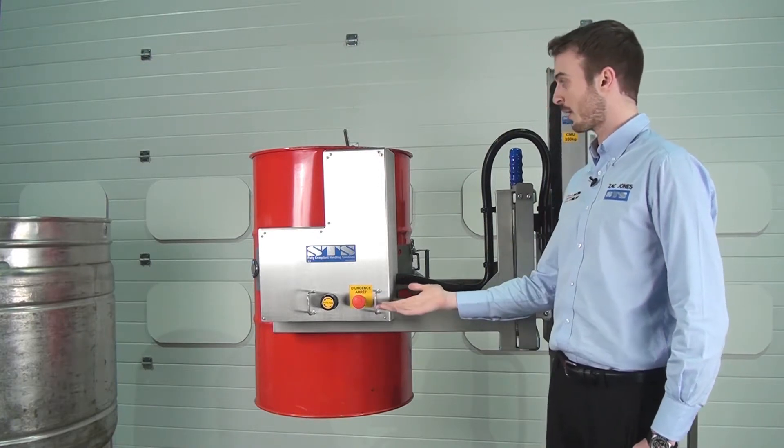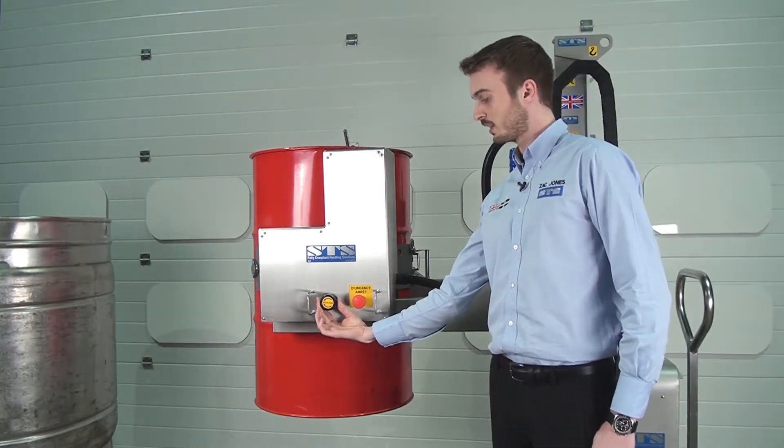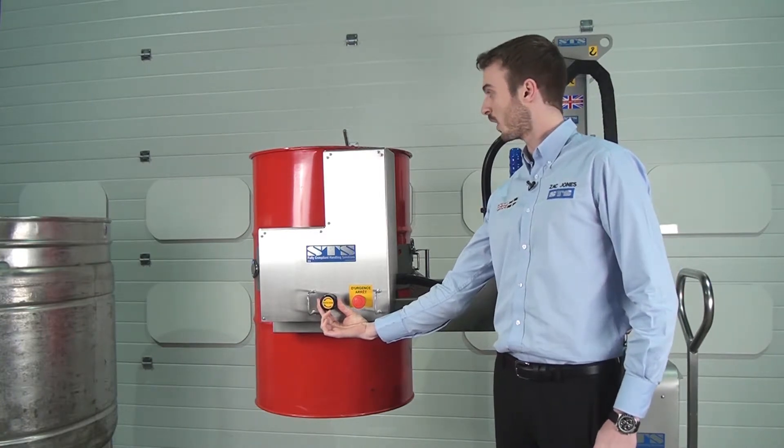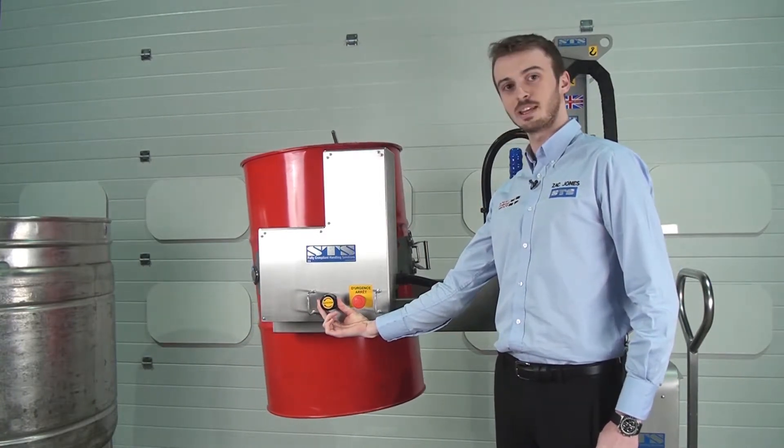So just to show you how it works, we have a rotational control here. We twist it anti-clockwise and the drum begins to rotate.